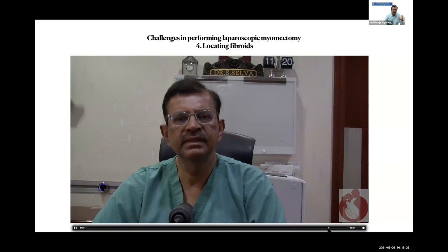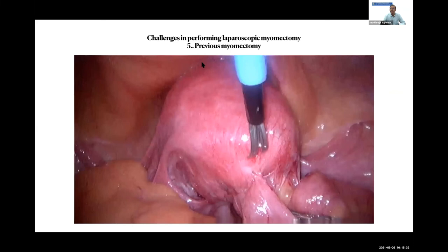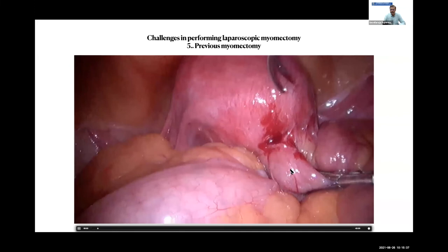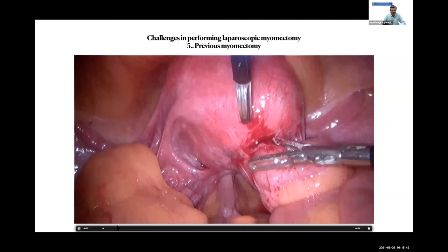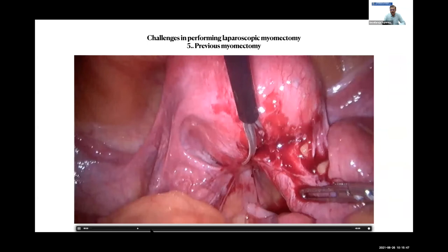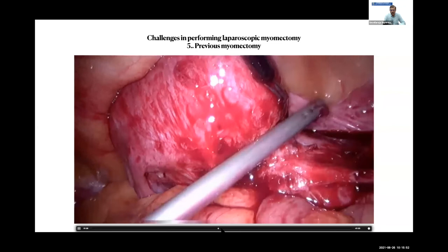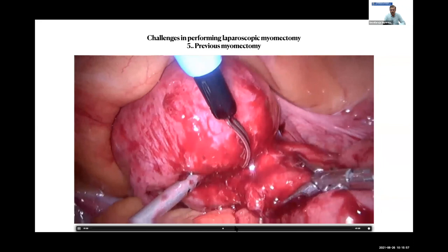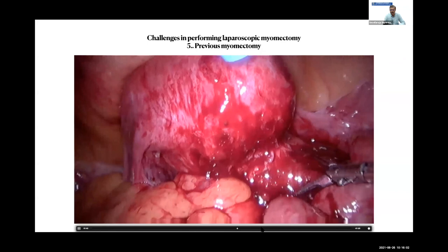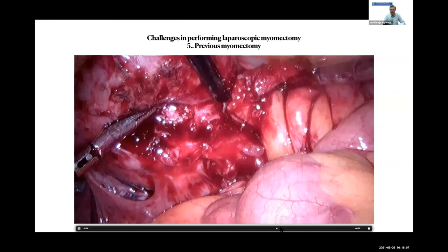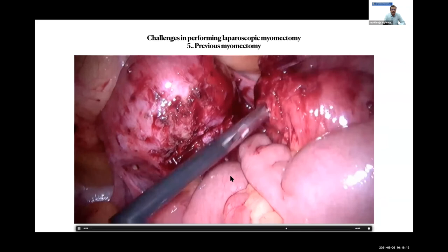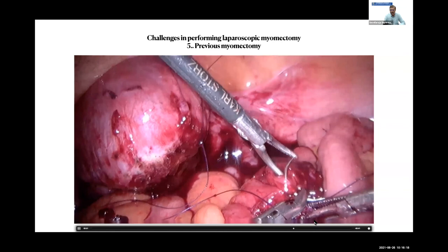The next challenge is previous myomectomy. When a patient has a previous myomectomy, bowel is always stuck very badly. In one case, the adhesions were so bad that I went into the bowel while trying to dissect. I found a small hole in the bowel that had to be repaired. When you have a patient with previous myomectomy requiring re-laparoscopic myomectomy or hysterectomy, be very careful of possible bowel injury and always dissect meticulously.